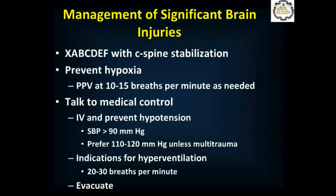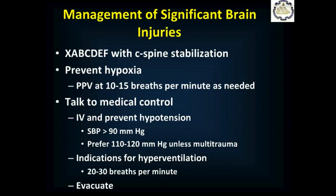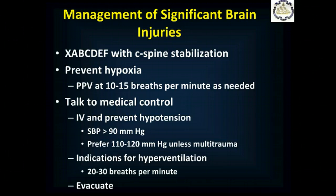With a patient who has a GCS of 6 and a head injury, after controlling external bleeding and maintaining airway-breathing-circulation, you do your neurologic exam, expose them, find clues, and stabilize the C-spine. You are going to need to do positive pressure ventilation — no one with that depressed a GCS is maintaining their own airway. You'll probably need to suction them as they may passively regurgitate or actively vomit. Talk to medical control about getting an IV to prevent hypotension — keep systolic greater than 90 mmHg, or 110 to 120 mmHg if not multi-trauma. If there's evidence of herniation syndrome, consider hyperventilation at 20 to 30 breaths per minute.